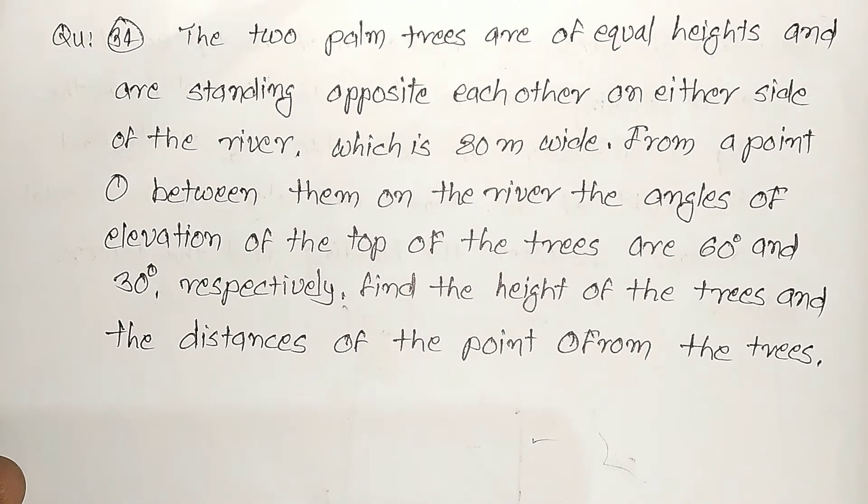The angles of elevation of the top of the trees are 60 degrees and 30 degrees respectively. We will find the height of the tree and the distance of the point O from the trees.